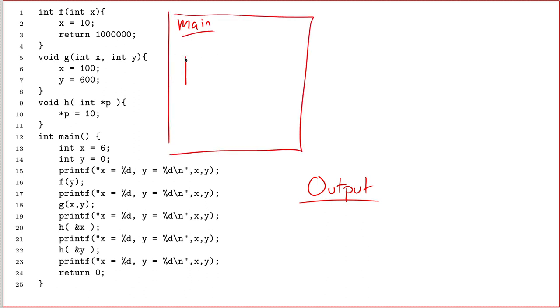And on line number 13, we create ourselves a variable. So there's x. And on line 14, I'll just get a step ahead here, we create y. So there's x and y. x has the value 6. y has the value 0.